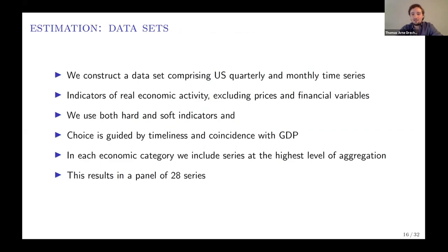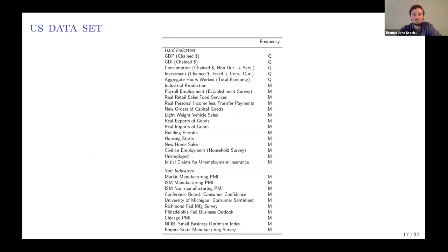We use data for the United States, including both quarterly time series and a number of monthly indicators—both hard and soft indicators. In composing this panel, we follow best practice in the literature, selecting series that are relatively timely, such as surveys, and others that capture labor market, production, and so on. We end up with a panel of 28 indicators: a couple of quarterly ones and then mostly monthly, some surveys and some hard indicators.